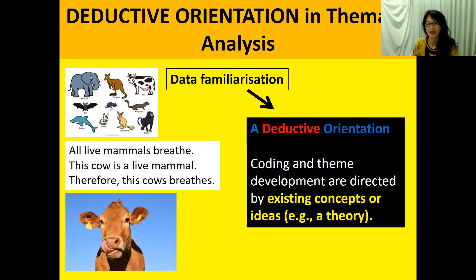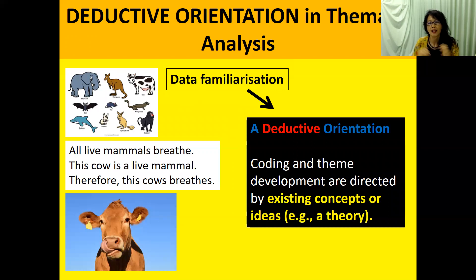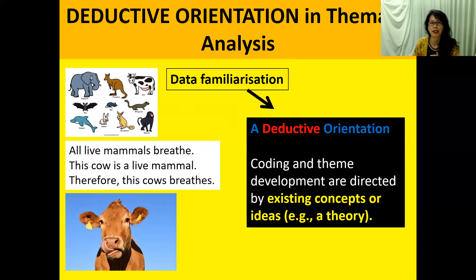As opposed to that, we have deductive orientation. Deductive reasoning goes from a premise and works out the specifics: all live mammals breathe; this cow is a live mammal; therefore this cow breathes. It moves from a general rule and deduces a specific detail. In deductive orientation in thematic analysis, we start with an analysis framework — like Hebel et al. 2009, with five kinds of information that could appear in a news article on HPV vaccine — and we use that framework on each text we analyze and stick to it.